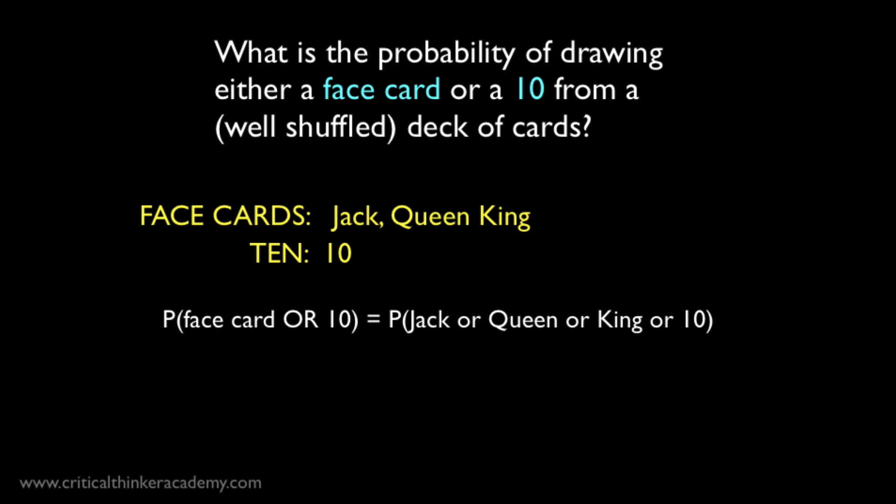So we'd write the probability of getting a face card or a 10 as just the probability of getting a jack or a queen or a king or a 10. Now, if these events are mutually exclusive, then we can apply the restricted disjunction rule. Are they? Sure they are. If you draw any one of these cards, you can't simultaneously draw any of the others. So they're all mutually exclusive.